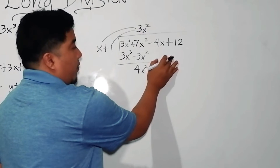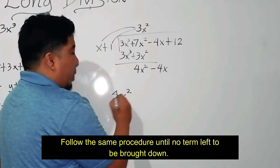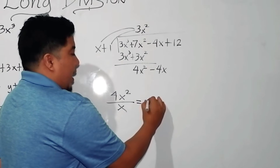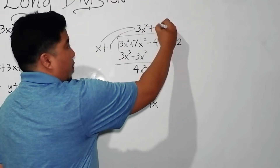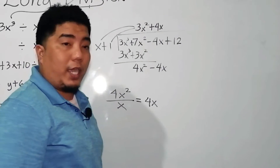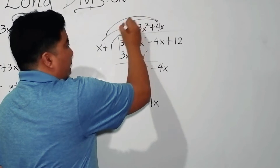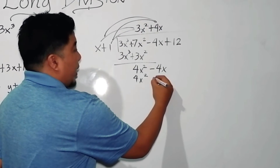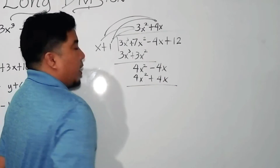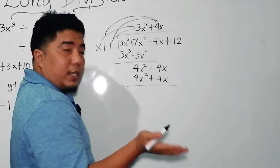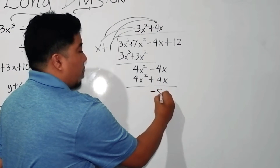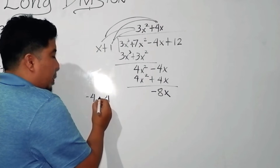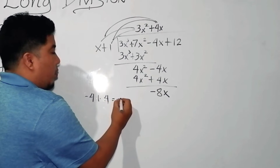Same process: cover the terms, giving you 4x squared divided by x, which equals 4x. So positive 4x is written as your next quotient term. This 4x is distributed again: 4x times x is 4x squared; 4x times 1 is positive 4x. Next, you subtract. 4 minus 4 is 0. Negative 4 minus 4 gives negative 8x — because in the rule of subtracting integers, the minus becomes plus and the 4 becomes negative, giving you negative 8.